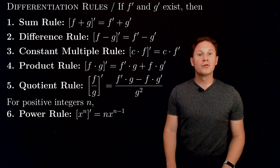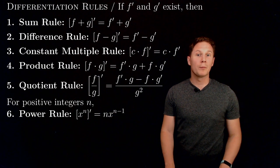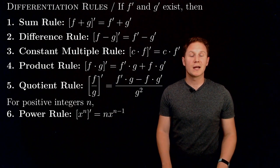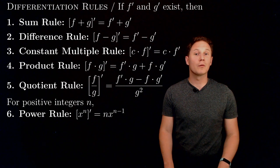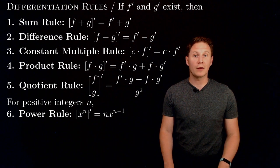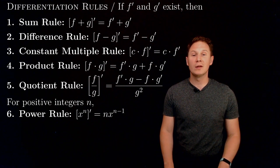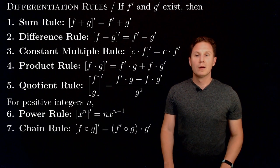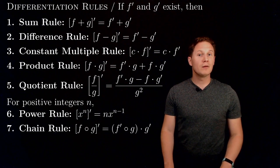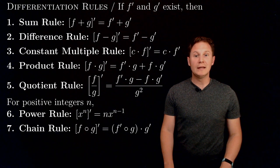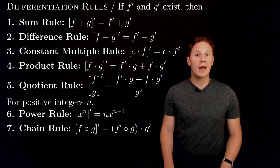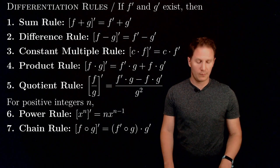For any positive integer n, we have the power rule, which says that the derivative of x to the n with respect to x equals n times x to the n minus one. We also have the chain rule, which says that the derivative of the composition of f and g equals the composition of f prime and g, multiplied by g prime.